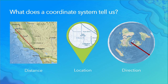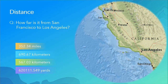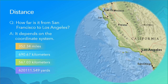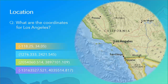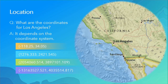What does a coordinate system tell us? It can tell us distance, location, or direction. For example, how far is it from San Francisco to Los Angeles? We can say it's 352 miles, 690 kilometers, or other values — it all depends on what coordinate system you're using. The same applies to location: we can say we're at minus 118.34 or at 1276. Different values, depending on the coordinate system.